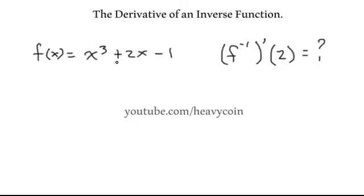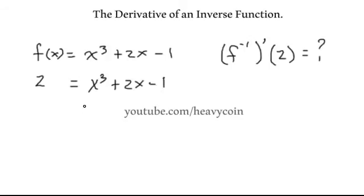We're given this function F of X and we're asked to find the derivative of the inverse evaluated at 2. In other words, what number can I plug into this function that gives me 2 out? So I set 2 equal to x cubed plus 2x minus 1 and do a trial. Starting with x equal to 1: 1 plus 2 times 1 is 3, and 3 minus 1 is 2. That's right.